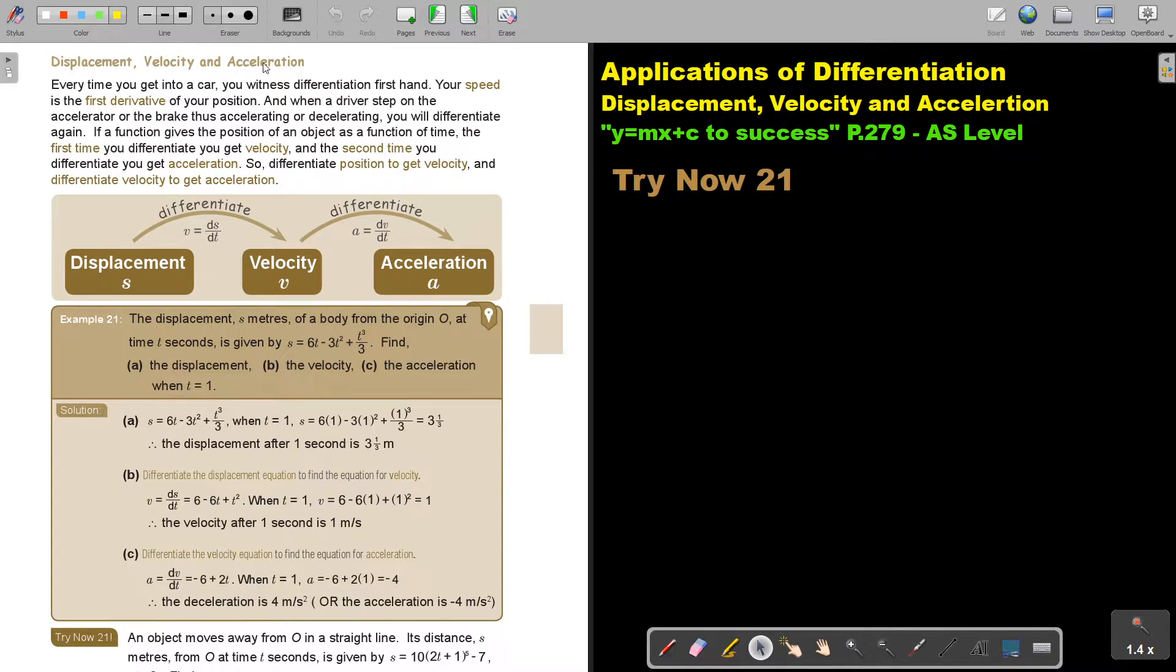Displacement, velocity and acceleration. Every time you get into a car, you witness differentiation first hand. Your speed is the first derivative of your position and when a driver steps on the accelerator or the brake, thus accelerating or decelerating, you differentiate again. If a function gives the position of an object as a function of time, the first time you differentiate you get velocity, and the second time you differentiate you get acceleration.